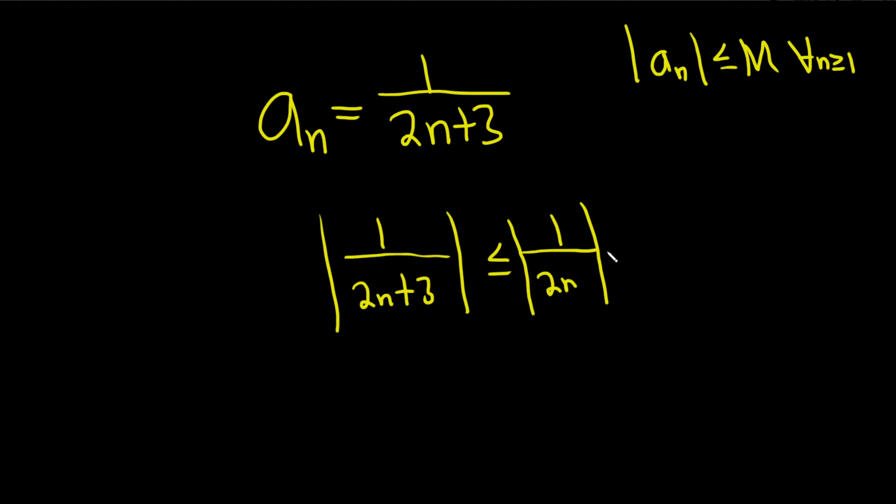And n here, well we can drop the 2 as well. We can do this and we can drop the absolute value. Same reason. n here is greater than or equal to 1 and so this here is bigger than this so we can drop the 2.